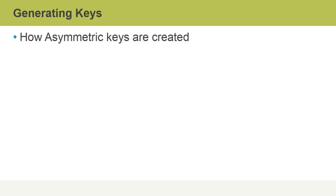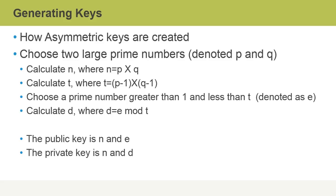Let's take a look at how asymmetric keys get created. First, two large prime numbers must be chosen — in our example, they're denoted as P and Q. Then we must calculate a value called N, where N equals P multiplied by Q. The mathematical calculations continue. The idea is that prime numbers have no discernible pattern, so when we build keys from prime numbers, we have a stronger key and therefore stronger encryption.